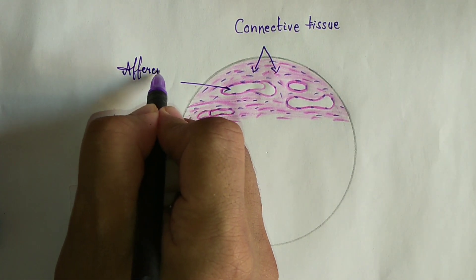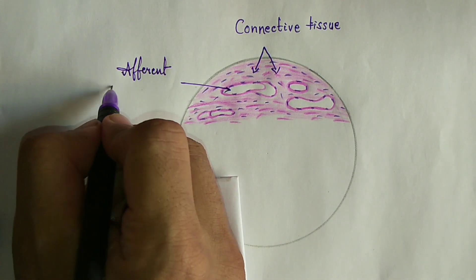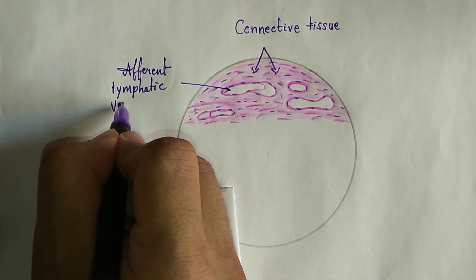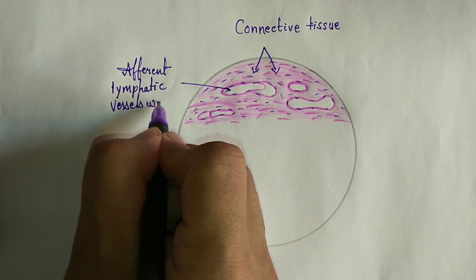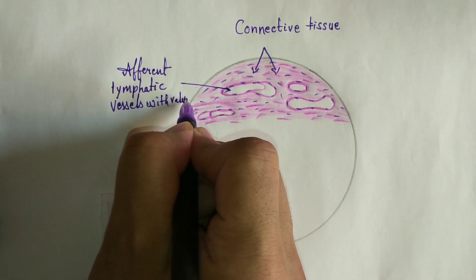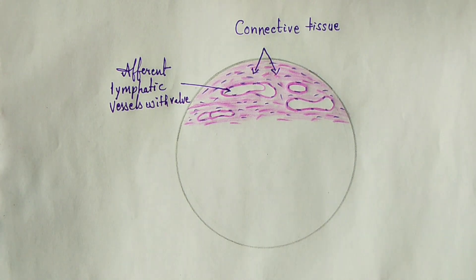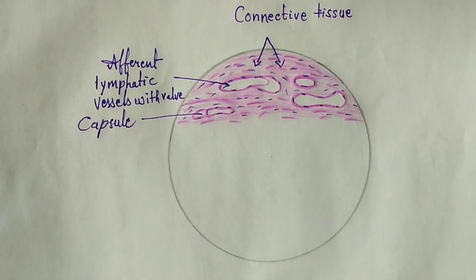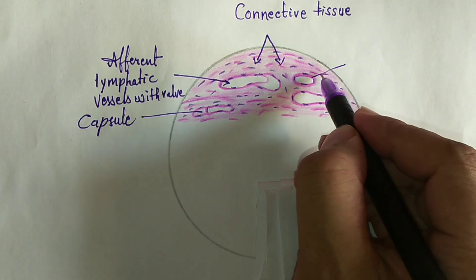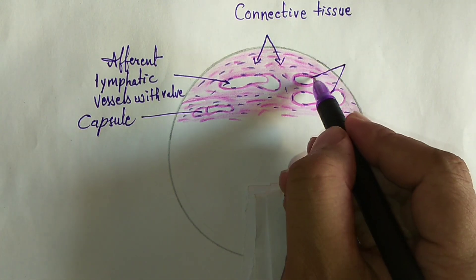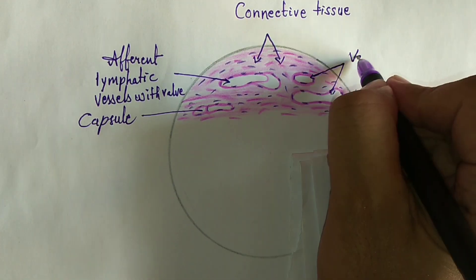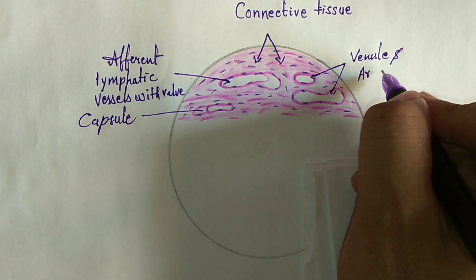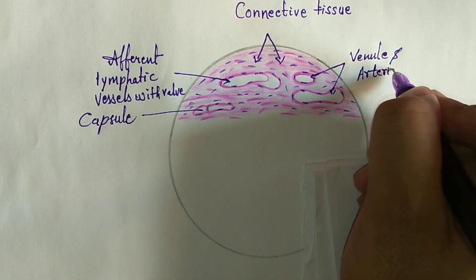Here we will label the afferent lymphatic vessel. Collected lymph enters the lymph node via afferent lymphatic vessels that penetrate the capsule at the convex surface. Connective tissue trabeculae arise from the inner surface of the capsule, and this structure is the capsule.